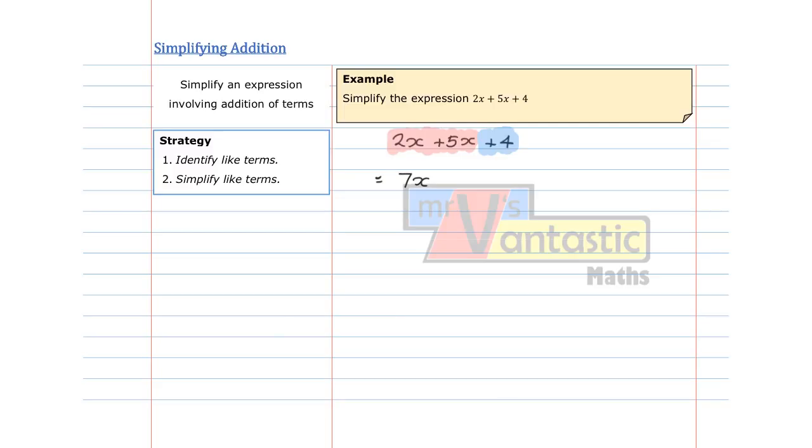And then we have the numbers, the plus 4. We can't do anything with it. Plus 4. So we cannot simplify this any further because 7x and 4 are not like terms.